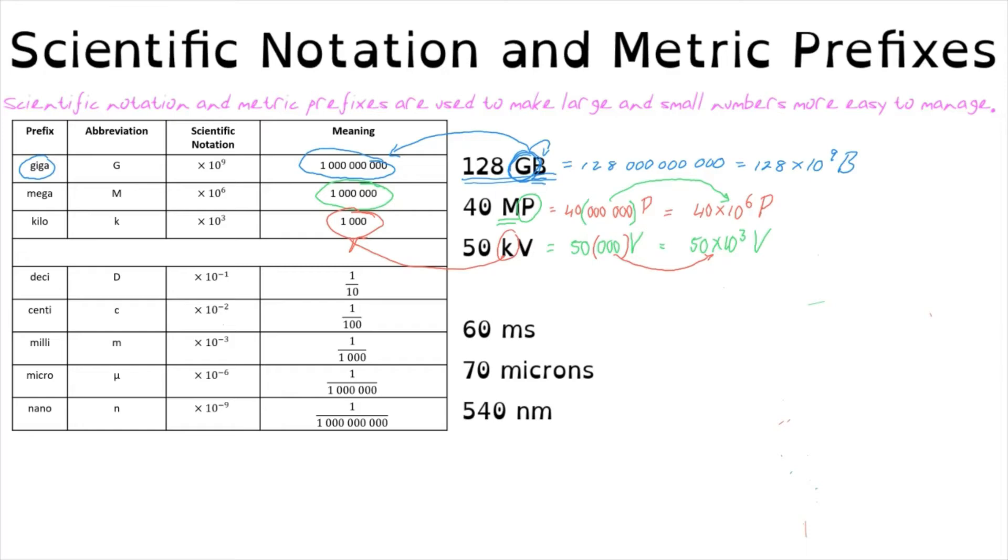In much the same way as we have these prefixes that represent factors that are extremely large, we can also use prefixes to represent incredibly small numbers. The most common ones are milli, micro and nano, where two that we commonly see as well are centi and deci. In this case, instead of multiplying by a factor of 1000 or a million or a billion, we are now dividing by a factor.